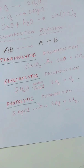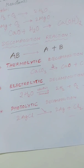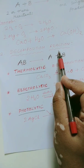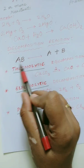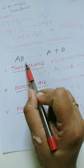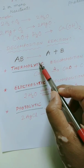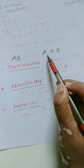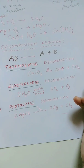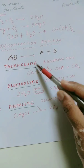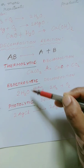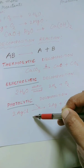Did you understand, children? Decomposition reaction is nothing but a reaction where a single compound or a single substance breaks down into two or more simpler substances. It can be done with the help of heat, electric current, or light.